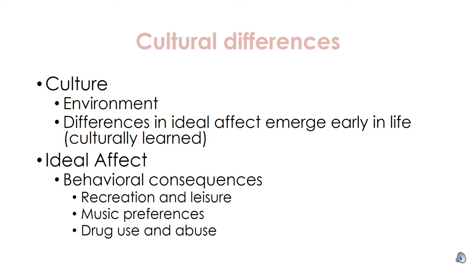Tsai discussed that affective states are neurophysiological changes often experienced as feelings, moods, or emotions that can be organized in two dimensions: valence and arousal. She also studied ideal affect — the affective states that people ideally want to feel — which involves the evaluation of affective states as positive or negative. Unlike attitudes toward emotion, ideal affect involves a clear ranking or ordering of affective states based on preference. Behavioral consequences include people making behavioral choices, consciously or not, based on their ideal affect, including what activities to engage in, what music to listen to, and even what substances to use.